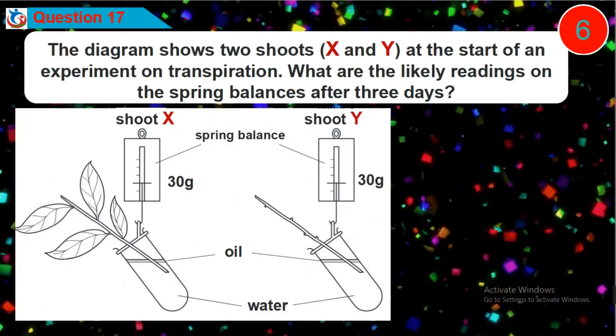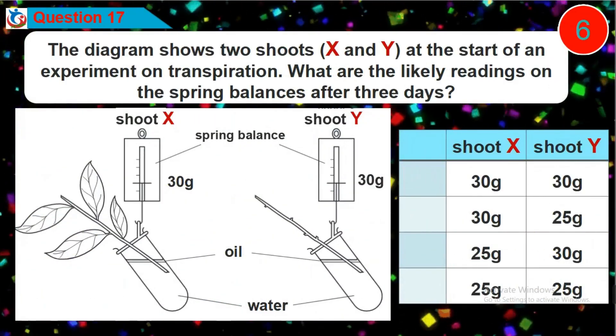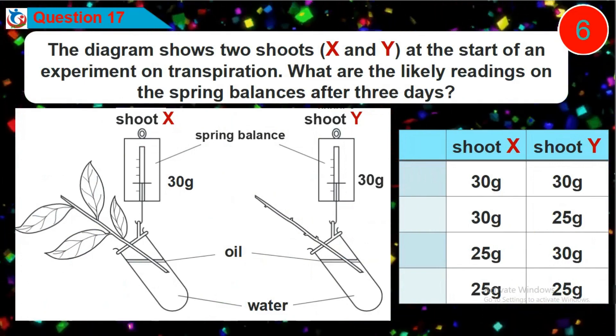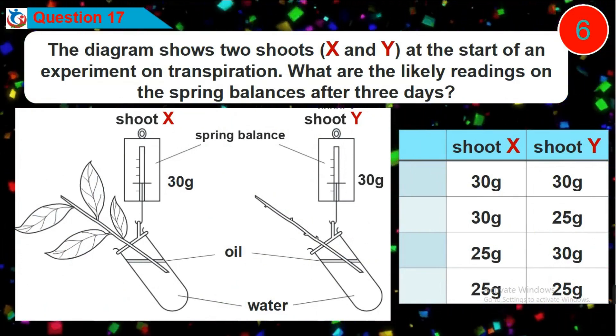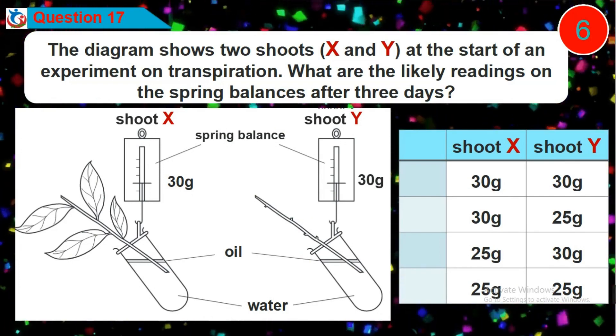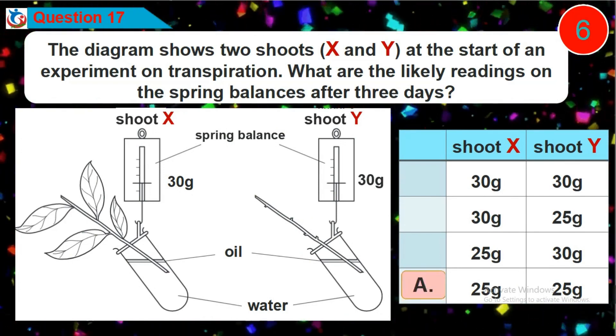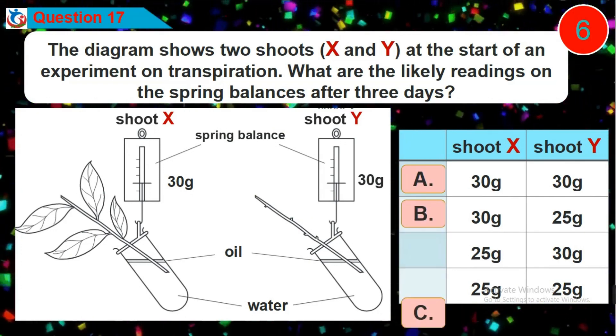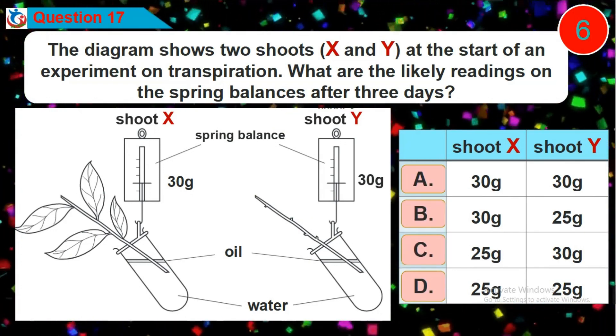Question 17. The diagram shows two shoots, X and Y, at the start of an experiment on transpiration. What are the likely readings on the spring balances after three days? Is it option A, B, C or D?